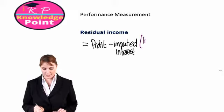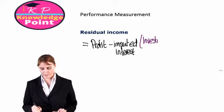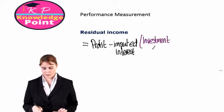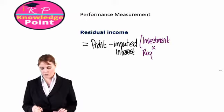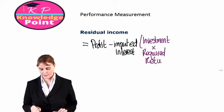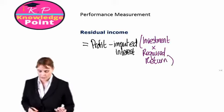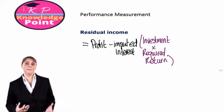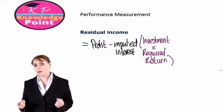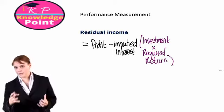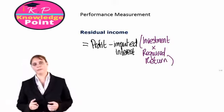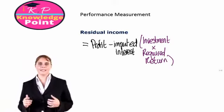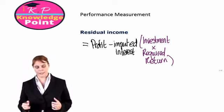Our imputed interest is our investment multiplied by the required return. So our imputed interest is just the amount we expect to earn back from a particular investment. So profit minus our imputed interest then gives us our residual income.